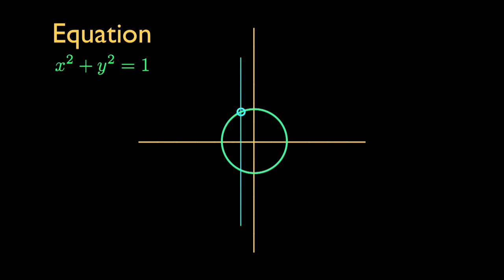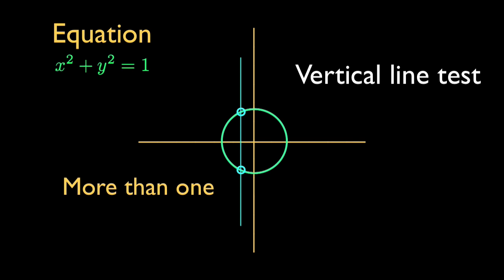Any time we're given a graph, we can use this vertical line test. Let's say we're given a graph to examine. In this case, I'm using the graph of the equation for the unit circle. Because I can find a vertical line that intersects the graph in more than one point, the vertical line test tells us this is not the graph of a function.